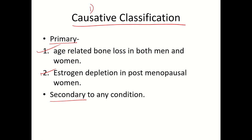The second primary factor is estrogen depletion in postmenopausal women. The menstrual cycle is important in maintaining estrogen quantity. Estrogen is very important in maintaining osteoblast activity. As estrogen depletes in the menopausal phase, bone mass density gradually drops. At the postmenopausal stage, there is complete reduction of estrogen level causing maximum low bone mass, leading to osteoporosis.